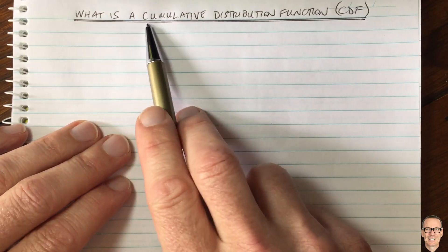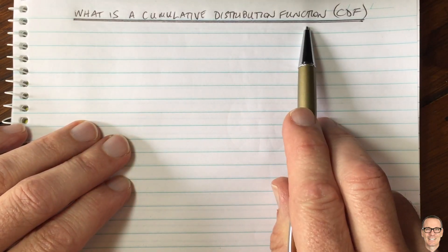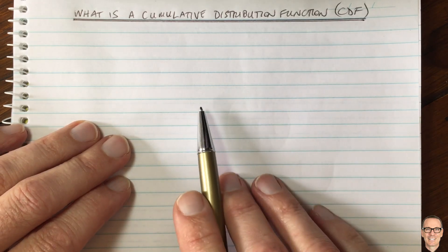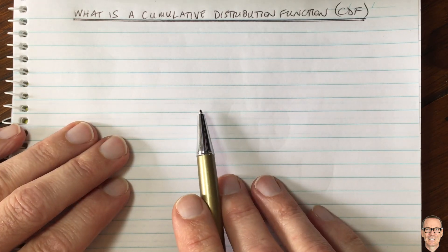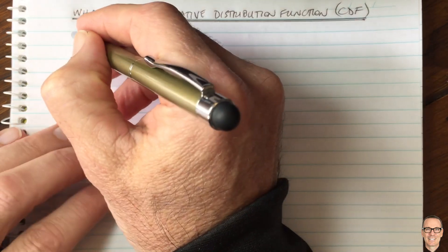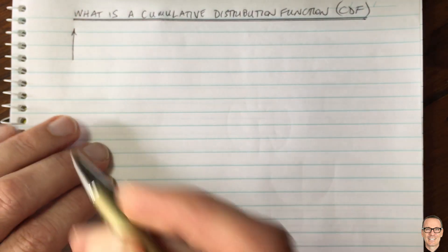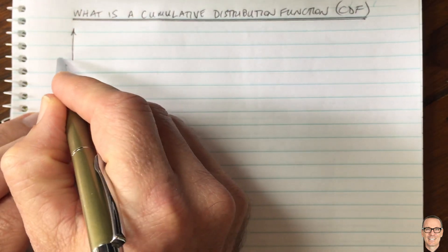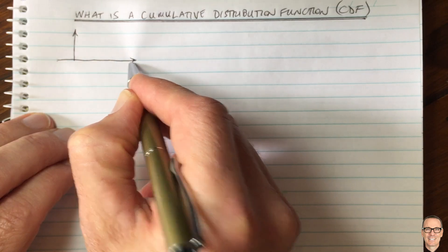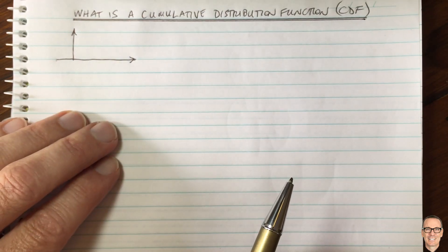So what is a cumulative distribution function for random variables? Let's start with an example. We'll consider a random variable which is the angle of a spinning wheel when you grab it, just for an example.